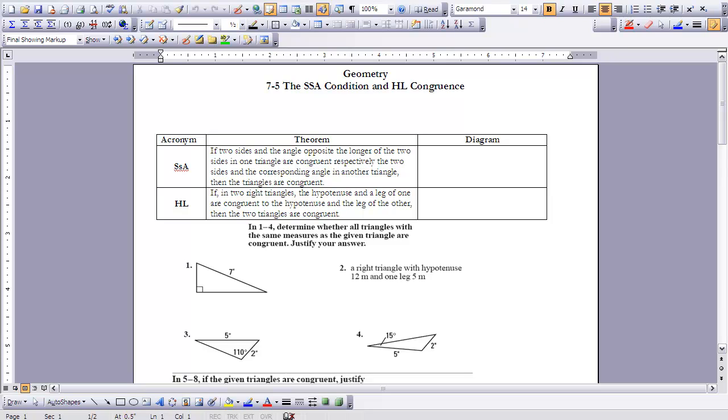What that means is if two sides and the angle opposite the longer of the two sides in one triangle are congruent respectively to the two sides and the corresponding angle in another triangle, then the triangles are congruent. And we'll talk about this in a bit. It's a little bit of a cumbersome theorem, and so we'll have to talk about the size of those sides and how they work.